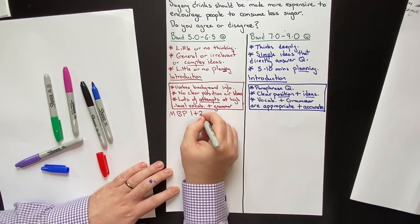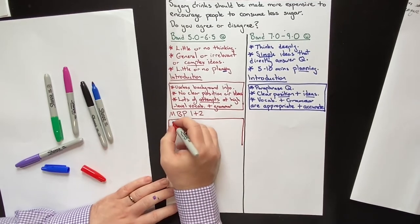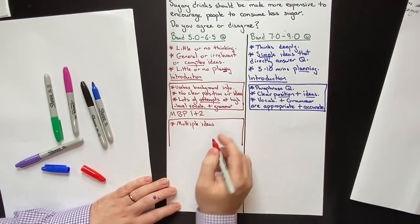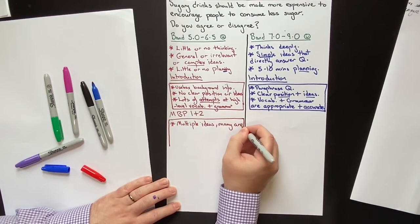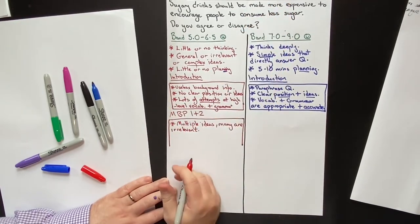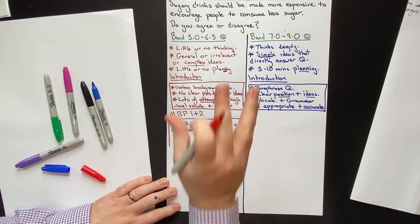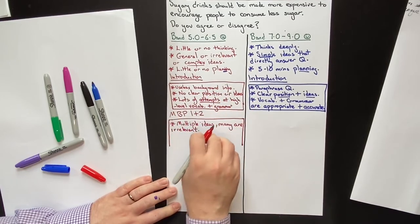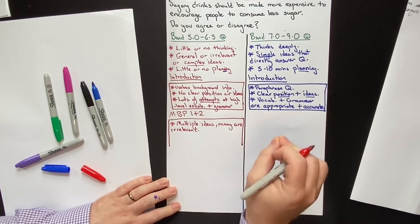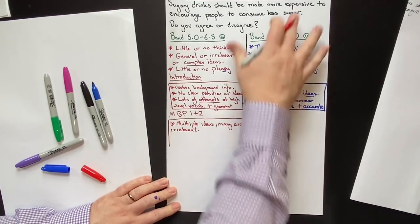Let's move on to the main body paragraphs. You're going to have two main body paragraphs for this particular type of question. What the low-scoring student does is have multiple ideas in one paragraph, and many are irrelevant — they just don't answer the question. There are lots and lots of main ideas. We call this a shotgun approach, where they are just shooting as much information as possible at the examiner.